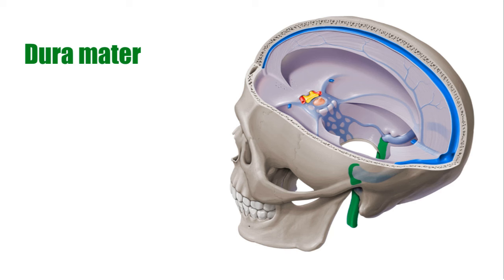The two layers of the dura mater separate from each other in certain places, creating partitions within the cranial cavity which help to hold the brain in place. There are four areas of dural infolding where the meningeal layer reflects inwards, away from the periosteal layer.